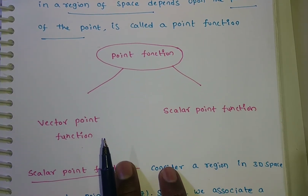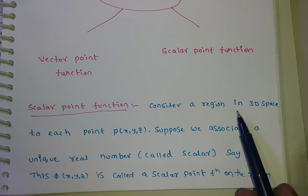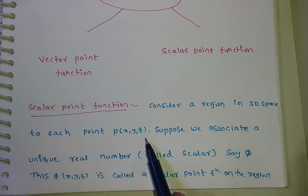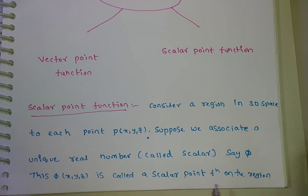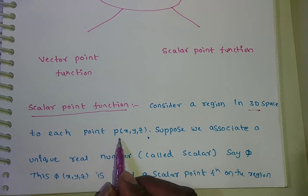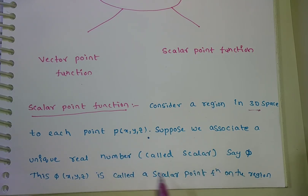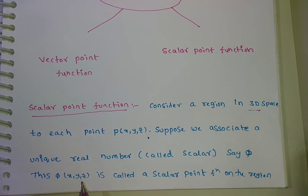These point functions are two types: one is vector point function and the other is scalar point function. Scalar point function means: consider a region in a 3-dimensional space. To each point P of x, y, z, suppose we associate a unique real number, say phi of x, y, z — this is called a scalar point function in the region. If it is in 2-dimensional space, then phi of x, y is called a scalar point function.